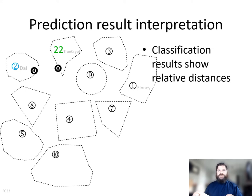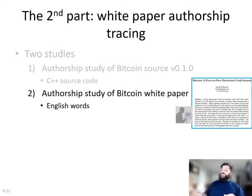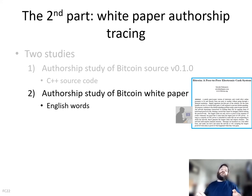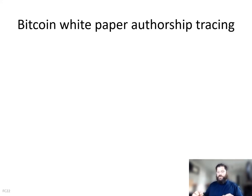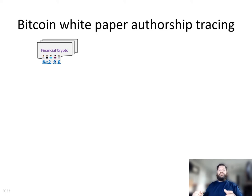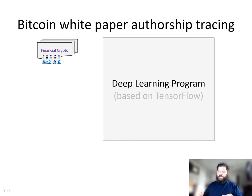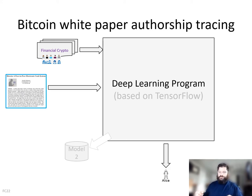The second part of our study was about the authorship of the Bitcoin white paper. We don't know for sure if the white paper was written by the same individual who wrote the Bitcoin source code — they may be the same or they may not. So we're going to analyze it using a different dataset. We will take white papers dealing with financial cryptographic topics and feed that into our deep learning program to produce a different model, then test against the unknown — the Bitcoin white paper — and generate a prediction of the relative distance between it and the ones we trained on.